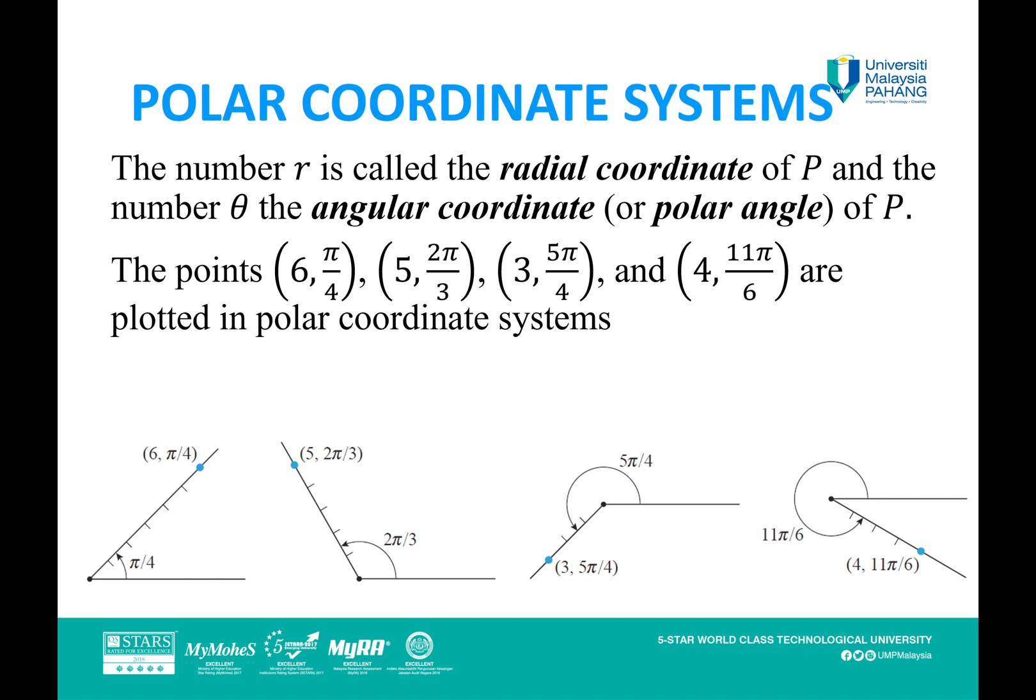In the first picture, for example (6, π/4), first we need to find the π/4 angle, and in this direction we need to count 6 units and plot the point at 6 on this line, which gives us the polar coordinate (6, π/4). The other points are plotted according to this rule.